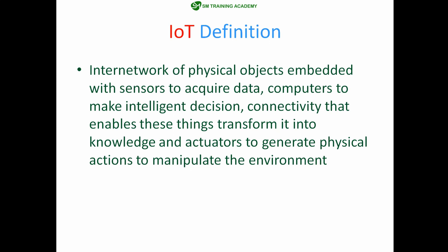Whatever the things may be, they will have sensors to acquire data, because sensors are most useful for acquiring data and converting physical quantities into electrical terms. Then there will be computers embedded in the IoT network, useful for making decisions based on the data received from the sensors.